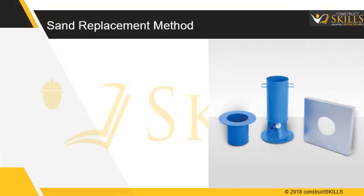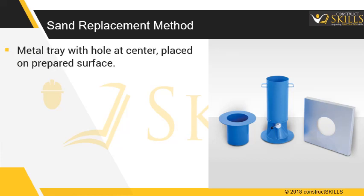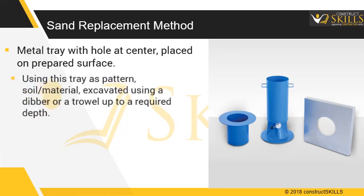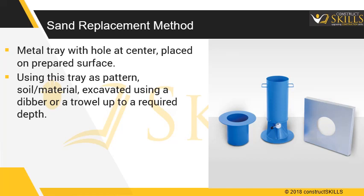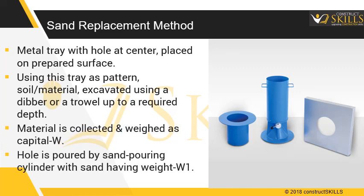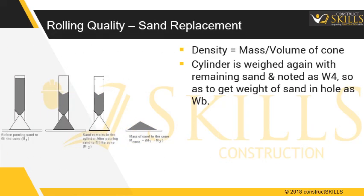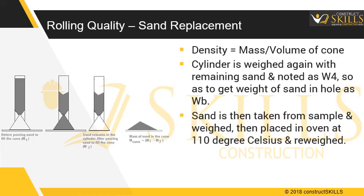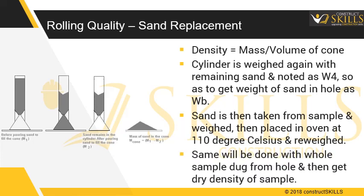Sand replacement method: a metal tray with a hole at the center is placed on the prepared surface. Using this tray as a pattern, the soil is excavated using a Dibura trowel to a required depth. Material is collected and weighed as W. The hole is filled using a sand pouring cylinder with sand of weight W1. The cylinder is weighed again with remaining sand, noted as W4, to get the weight of sand in the hole as WB. Sand is taken from the sample and weighed, then placed in an oven at 110 degrees Celsius and re-weighed. The same is done with the hole sample to obtain the dry density.